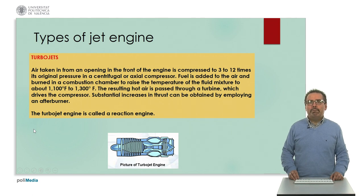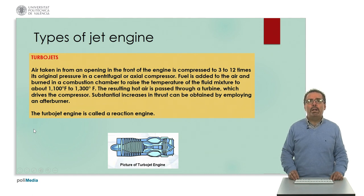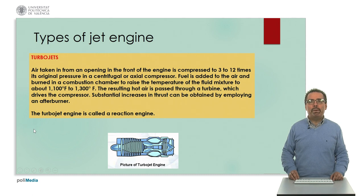Then we have a very important increase in thrust obtained by employing an afterburner. An afterburner is something that is not present in all jet engines, but it can increase thrust and the power of the engine considerably. The turbojet engine is also called a reaction engine, and here we have one example pictured.